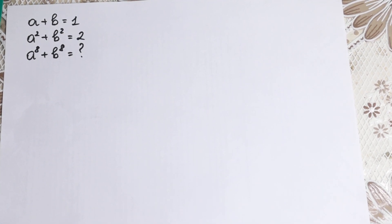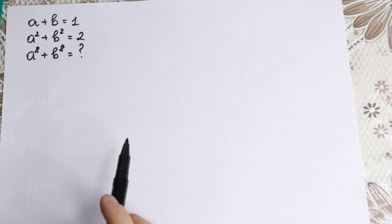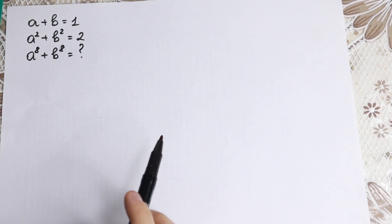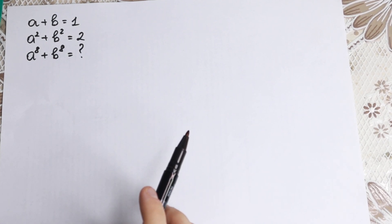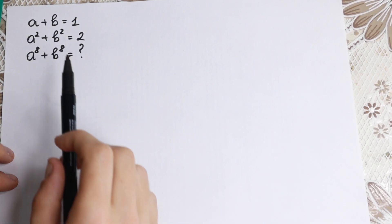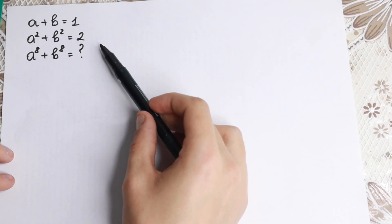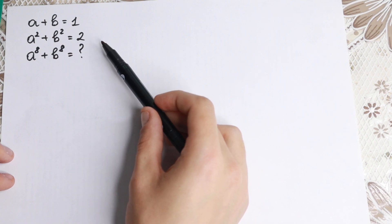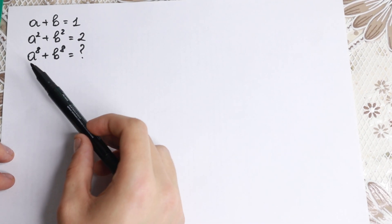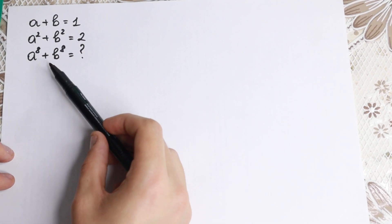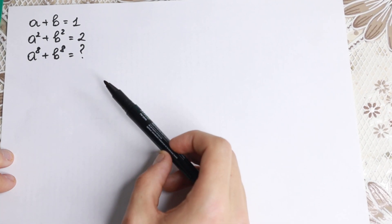Hello everyone, welcome back to Higher Mathematics, happy to see you here. Today we have a really interesting algebra problem. We have that a plus b equals 1, a squared plus b squared equals 2, and we need to find a to the 8th plus b to the 8th.